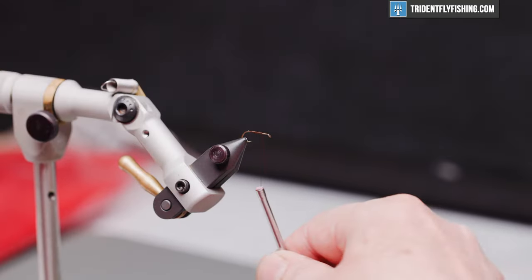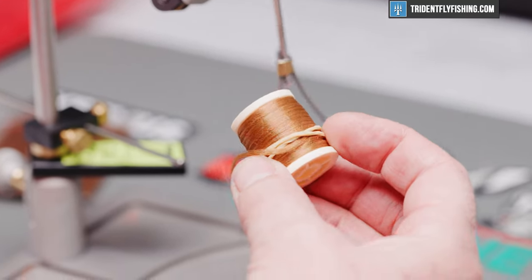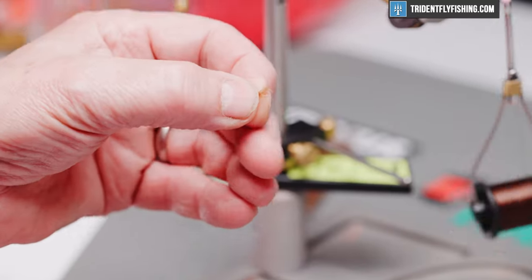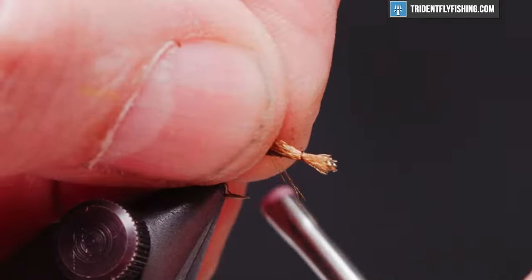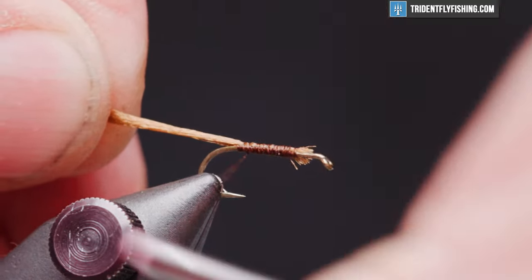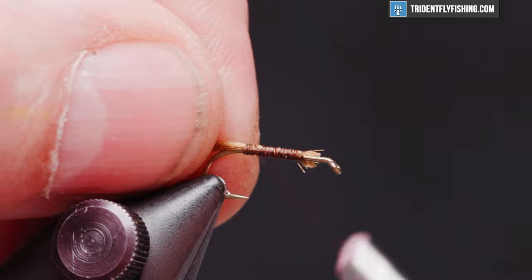We'll tie in our first material that's going to represent the shuck. It's just some tan antron. Got a small piece right here. Tie that in on top of the hook, and we'll cut that off about half a hook shank in length.